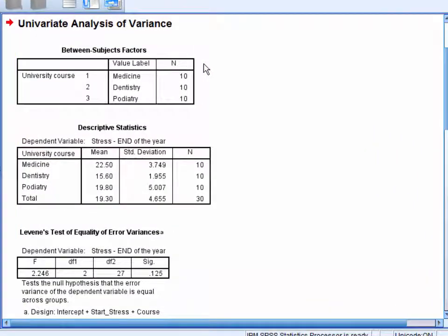First, we have the Between Subjects Factors table, which shows the number of students in each of the university courses.